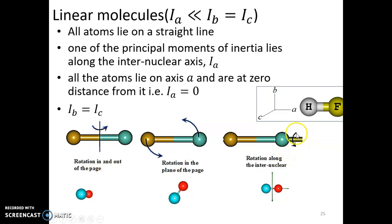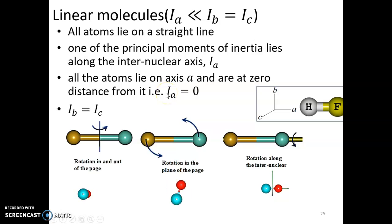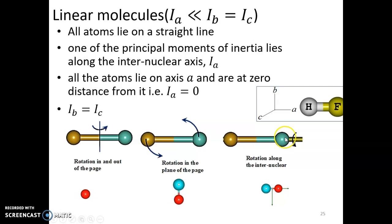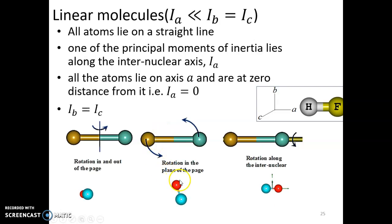Rotation along the internuclear axis gives Ia = 0 because all atoms are at a distance of zero from that axis. Since the moment of inertia is proportional to the rotating distances, and that distance is zero, Ia is zero. For rotation in the plane of the page, there is a non-zero rotating distance.